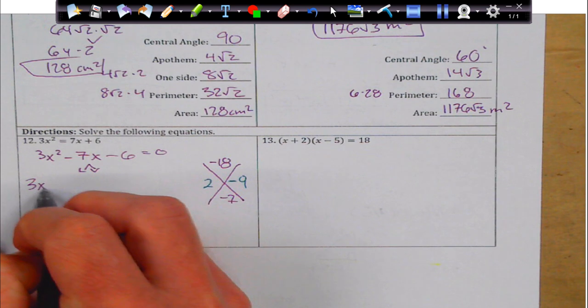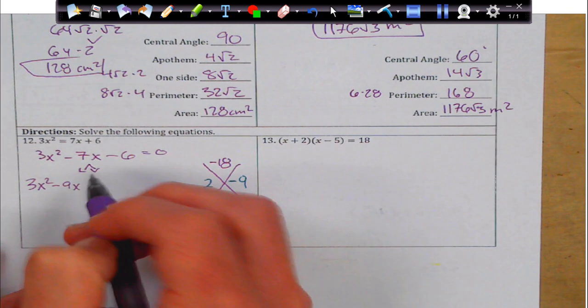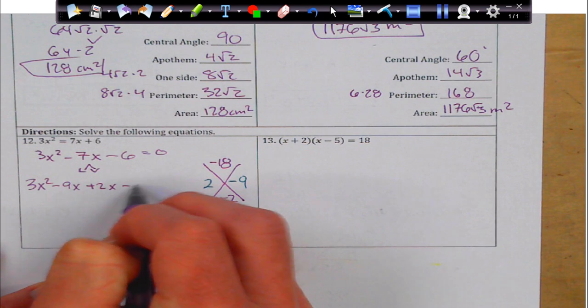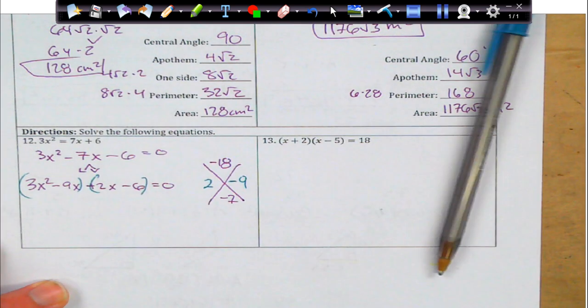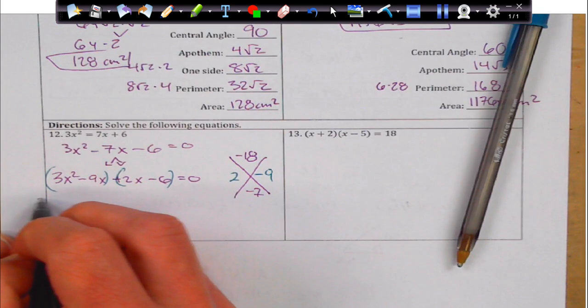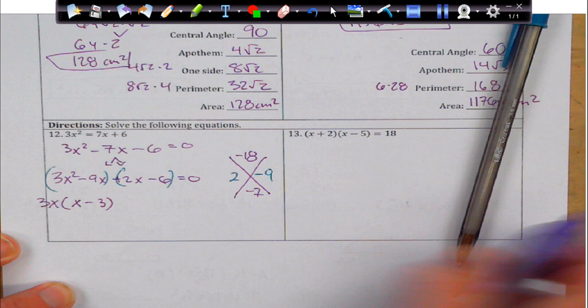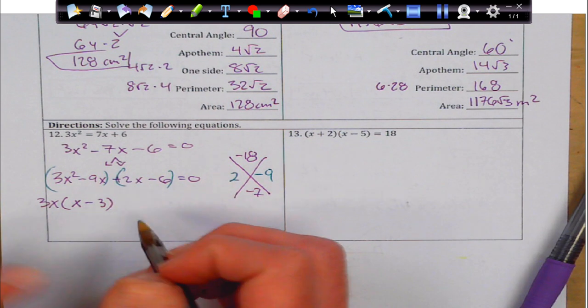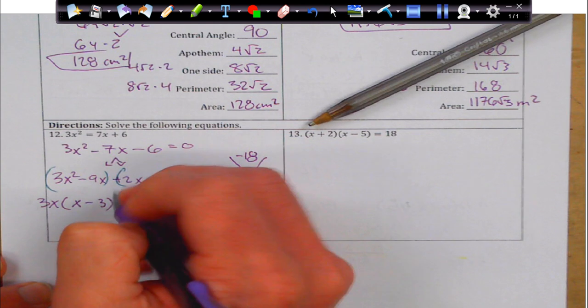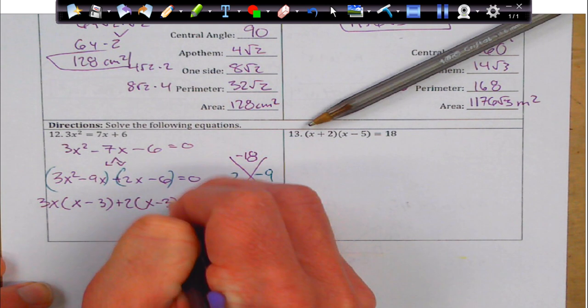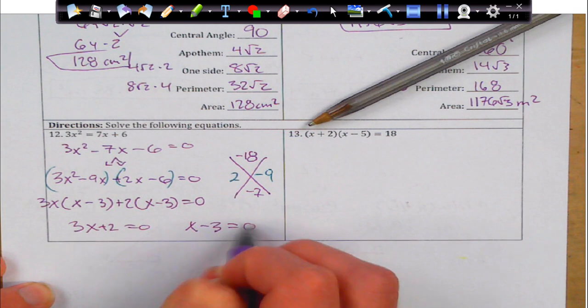All right. 3x squared. We're going to throw the 9x over here just because I feel like it will pair with the 3 a little bit better. Plus 2x minus 6 equals 0. And we're going to group those. And GCF. We're going to be able to take a 3x out of that bad boy. That's going to leave me with x minus 3. And whatever I take out of here, I hope it leaves me with the same thing. And it looks like I can take out a 2. I'll just leave that. x minus 3. Those are the same. So, I'm going to get 3x plus 2 equals 0.